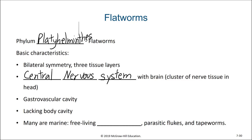They have a gastrovascular cavity like we saw with the cnidarians, in that it has a single opening to that digestive compartment. That one opening functions as both the mouth and an anus. They do not have a body cavity to store their internal organs, but they do have organs embedded within their body wall.